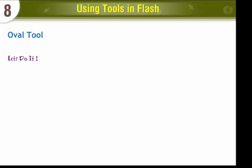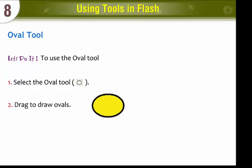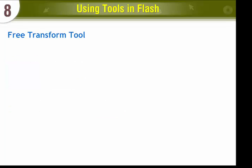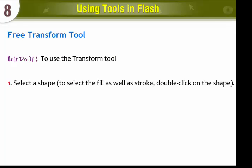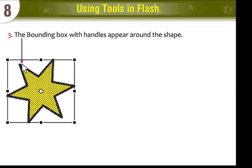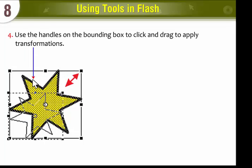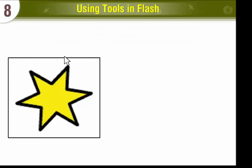Oval Tool. To use the Oval Tool, select the Oval Tool and drag to draw ovals. Free Transform Tool: to use the Free Transform Tool, select a shape. To select the Fill as well as the Stroke, double-click on the shape. Select the Free Transform Tool and the bounding box with handles will appear around the shape. Use the handles on the bounding box to click and drag to apply transformations. The shape will get resized.